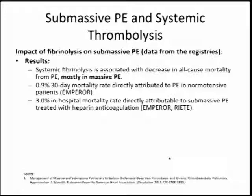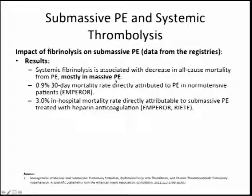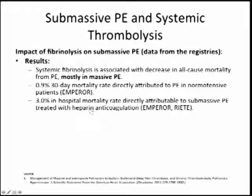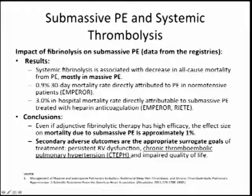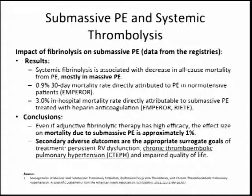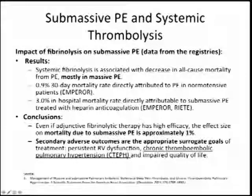In summary, the impact of fibrinolysis on submassive PE: mortality benefit is not demonstrated as it is in massive PE. The EMPEROR trial showed a 1% mortality rate for all normotensive PEs including submassive, and a 3% short-term mortality for submassive PE treated with anticoagulation alone. Risk-adjusted, the mortality effect of thrombolysis for submassive PE is about 1%. This means the main goal of systemic thrombolysis becomes treating secondary adverse outcomes — specifically chronic thromboembolic pulmonary hypertension.